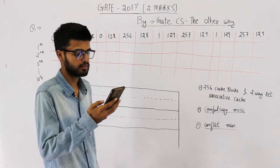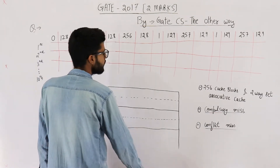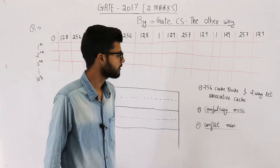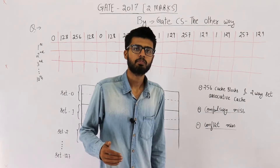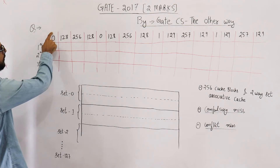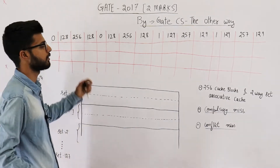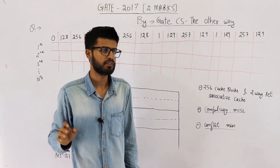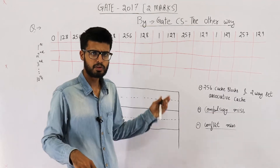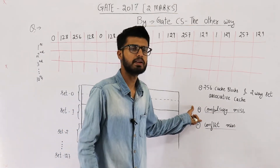They're defining two terms in the question: compulsory miss and conflict miss. A compulsory miss happens when some block is referred for the first time. For example, in the sequence you can see block number 0, block number 128, and block number 256 are referred for the first time here. Certainly there is no chance you will find them in cache, so these three references will be a miss because they're referred for the first time. These misses are termed compulsory misses.